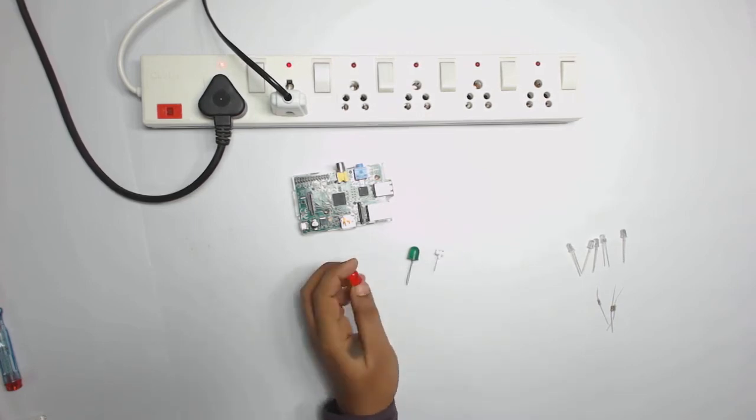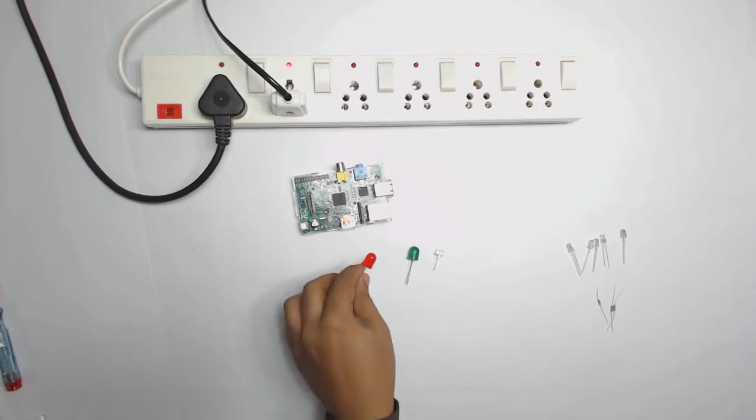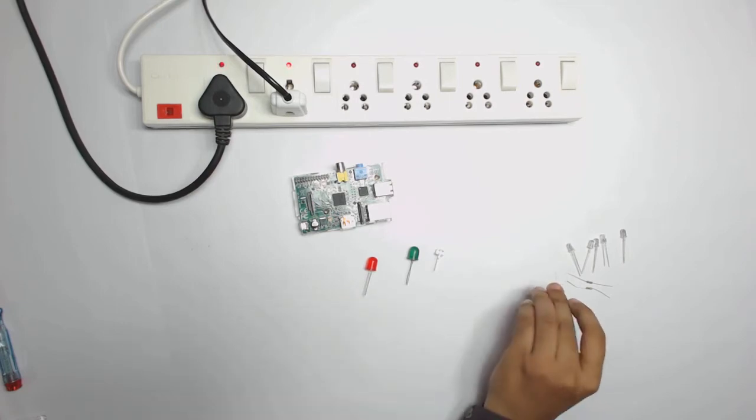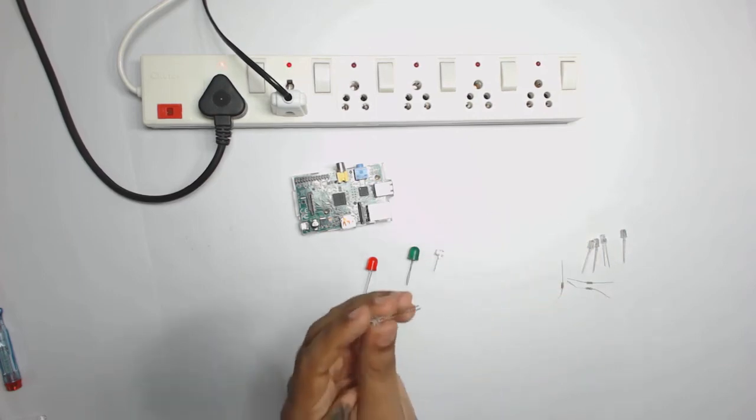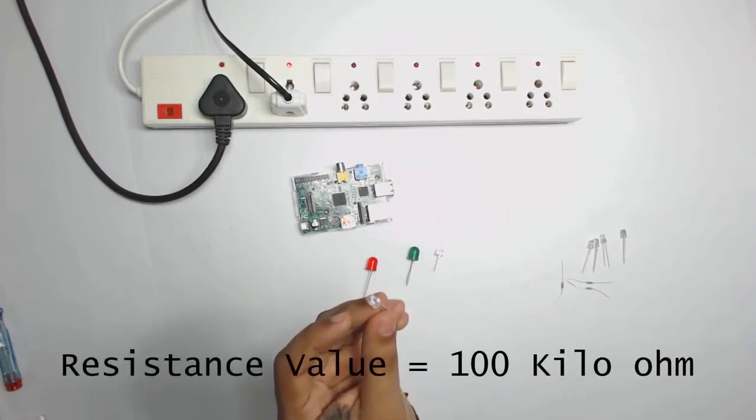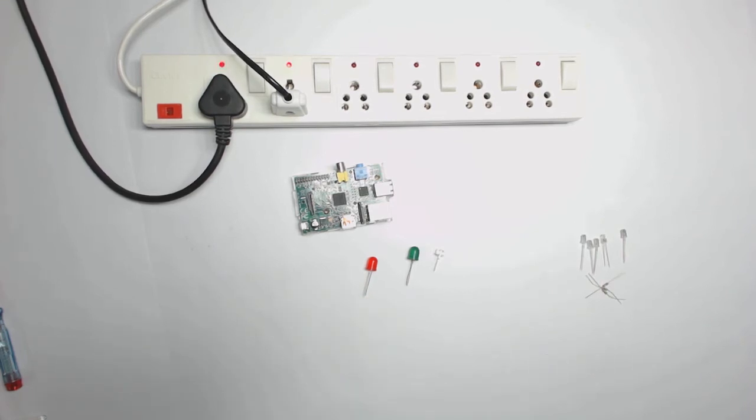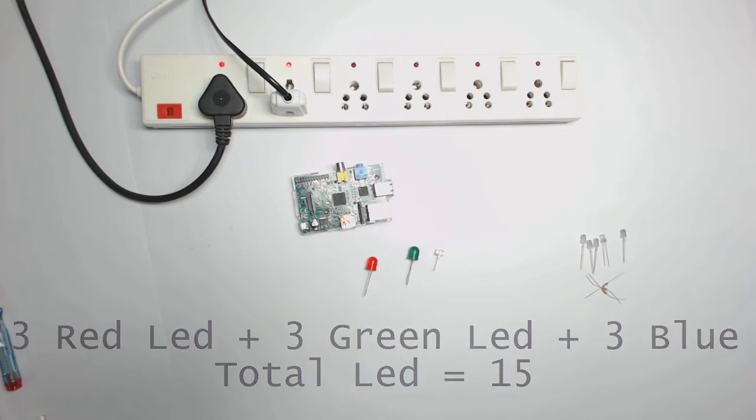If you are getting the bigger one like this, you don't need a resistance. And if you are getting a smaller one, then you need a resistance of 100 Kilo Ohms. We need 5 Red, 5 Green, and 5 Blue LEDs. If small LED, then 15 resistance and 15 LED.